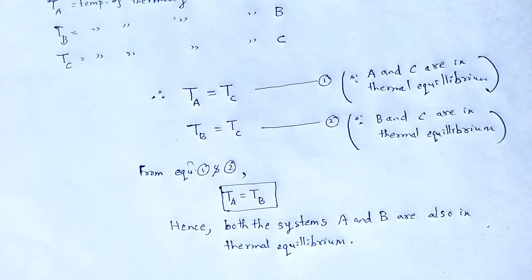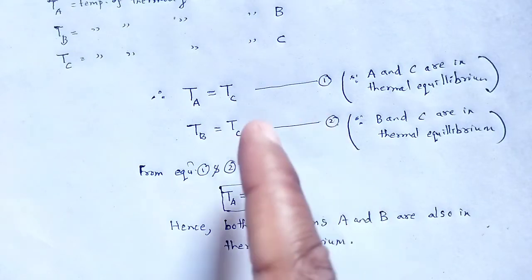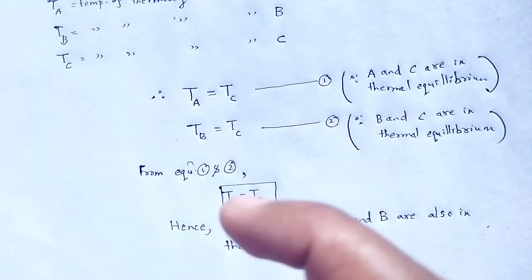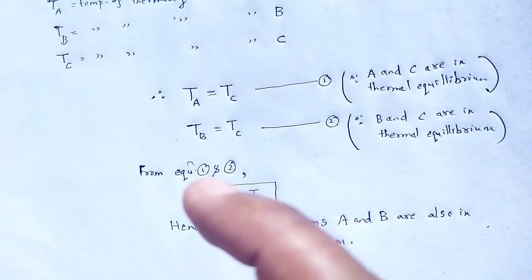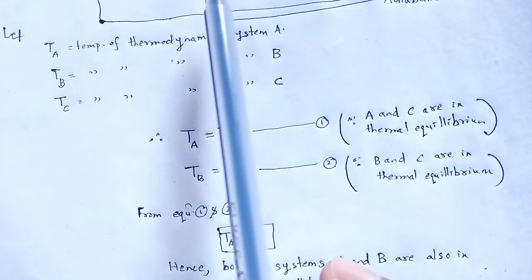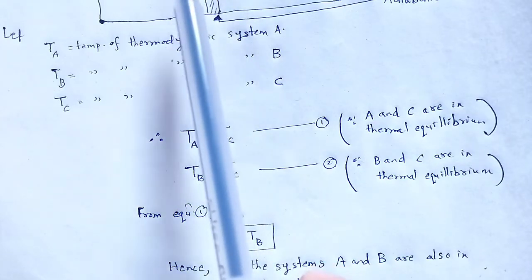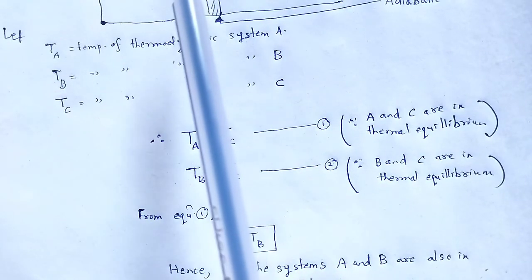From this analysis, what we get is: temperature is the property which determines whether a system is in thermal equilibrium with another system or not. Basically, on the parameter of temperature, we conclude whether a system is in thermal equilibrium or not. If two systems A and B are brought into thermal contact and heat flows from system A to system B, then system A is at a higher temperature than system B.